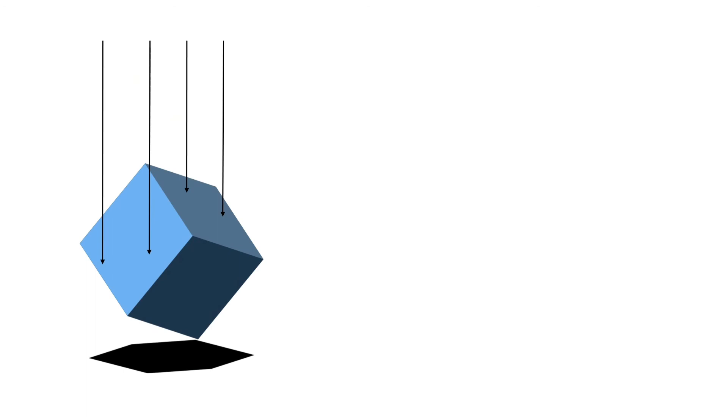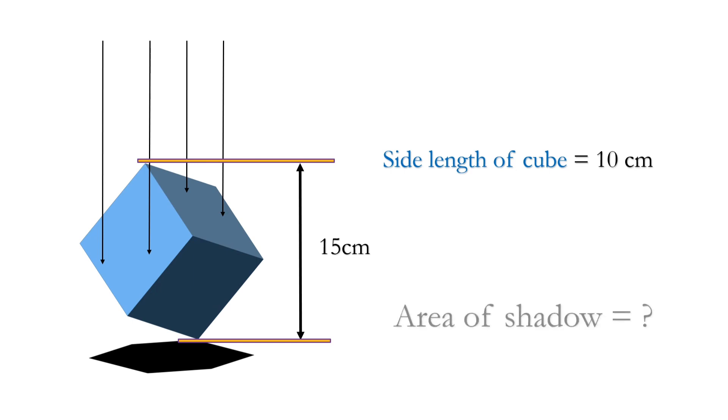Suppose this is the cube and due to vertical beam of light it is forming a shadow on the ground. Distance between its uppermost and lowermost ends is 15 centimeters and side length of the cube is 10 centimeters. Then you have to find the area of shadow.